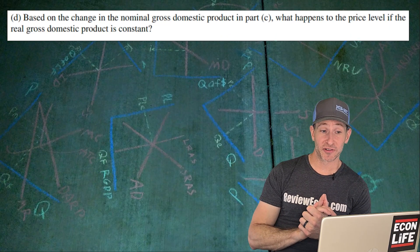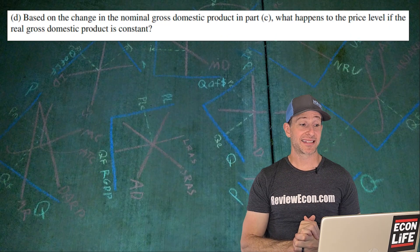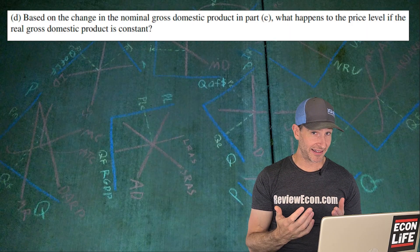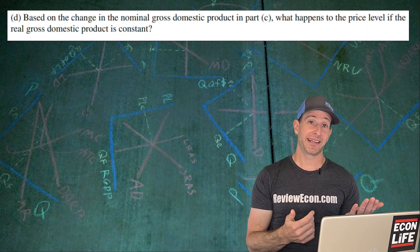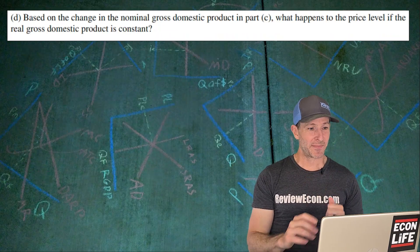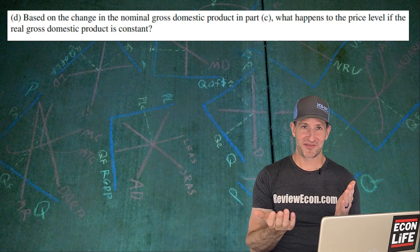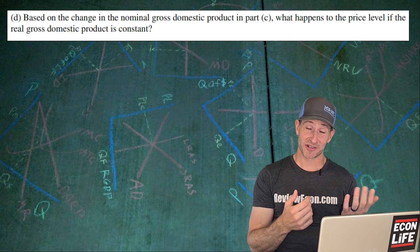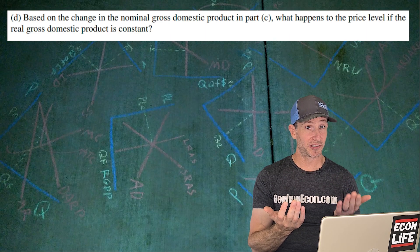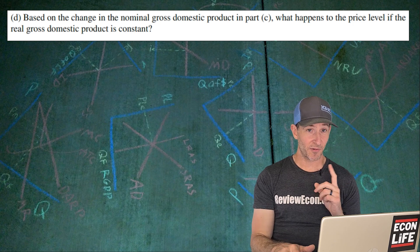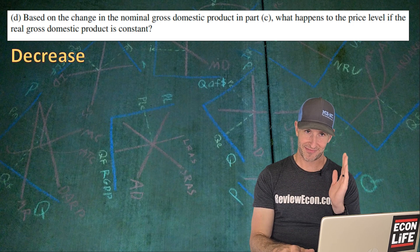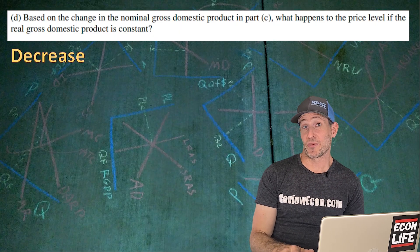On to D. Based on that change in nominal gross domestic product, what happens to the price level if real GDP is constant? We know that nominal GDP decreased. M times V equals nominal GDP, but so does P, which is the price level, times real GDP. We have to have a decrease, just state decrease. And that's because nominal GDP has decreased.